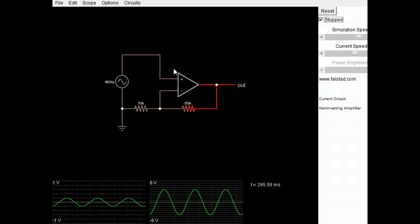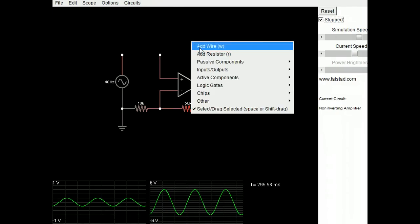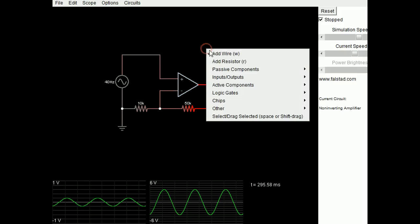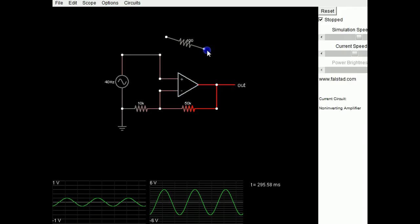If I stop this, I can delete individual parts. I can say delete. I can just right-click on an open area and say add a wire, and click and drag the wire. I can add resistors if I want.